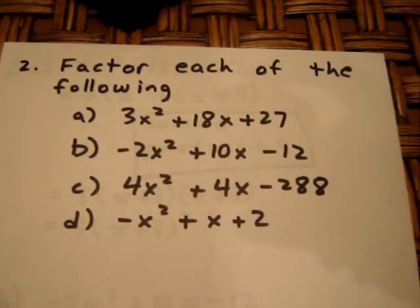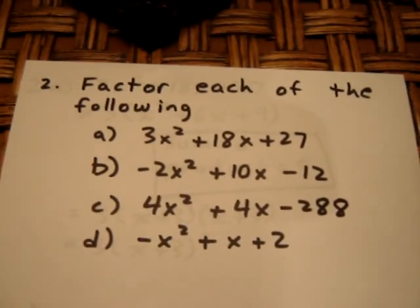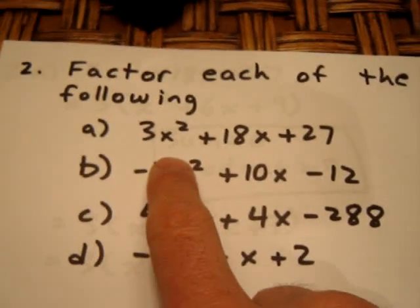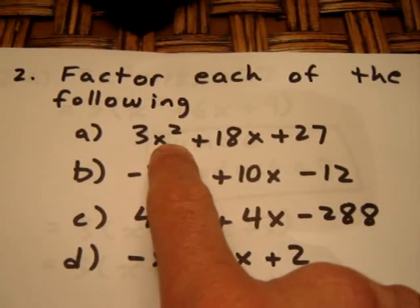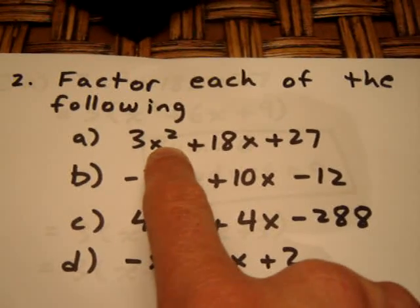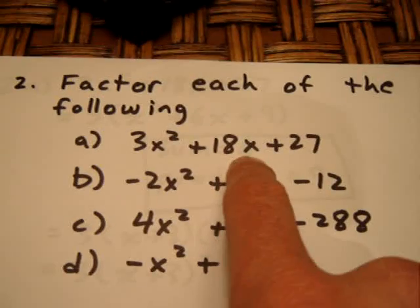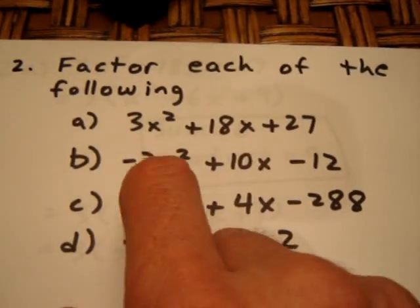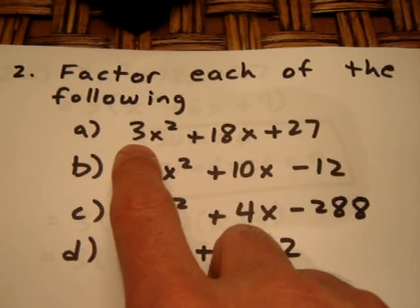For our next question, we're asked to factor each of the following. We notice that what we have here are trinomials which are, in a sense, in a friendly format because there's a variable of degree two in the first term, degree one, and degree zero. However, what we notice right away is that the leading coefficient is not one.